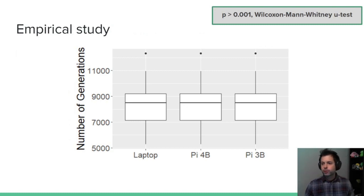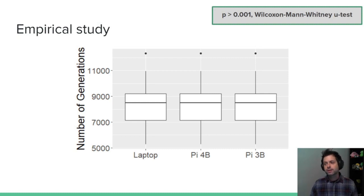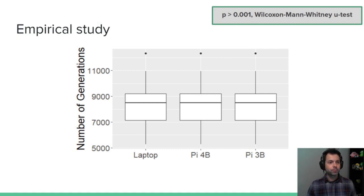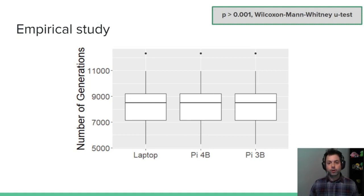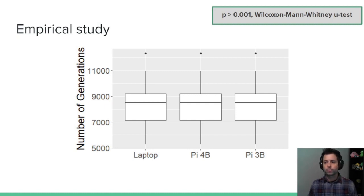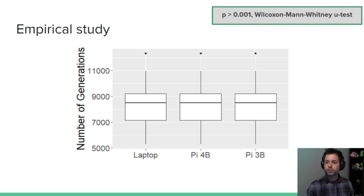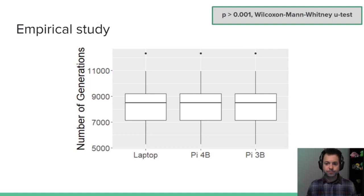In terms of our results, the first figure shows the number of generations it took to reach convergence — to actually find the target string. We compared a current-generation laptop with lots of RAM and a GPU, a Raspberry Pi 4B, and Raspberry Pi 3Bs. We found that convergence took exactly the same number of generations across each replicate. We applied the Wilcoxon Mann-Whitney U test with a significance level of 0.001 — very good significance. So convergence is possible, which is wonderful.